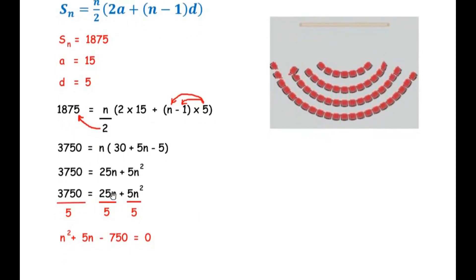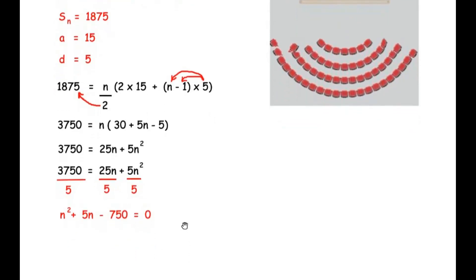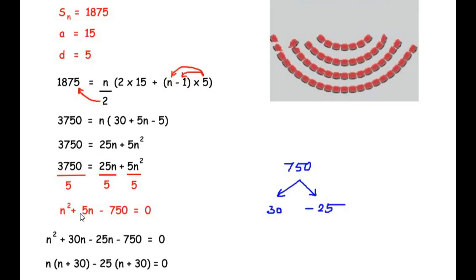Dividing by 5: 3750 ÷ 5 = 750, 25n ÷ 5 = 5n, and 5n² ÷ 5 = n². So we get: n² + 5n − 750 = 0. Now we factorize. We need two factors of −750 that add up to +5. The factors are +30 and −25, since 30 × (−25) = −750 and 30 + (−25) = +5. So 5n splits as +30n − 25n.